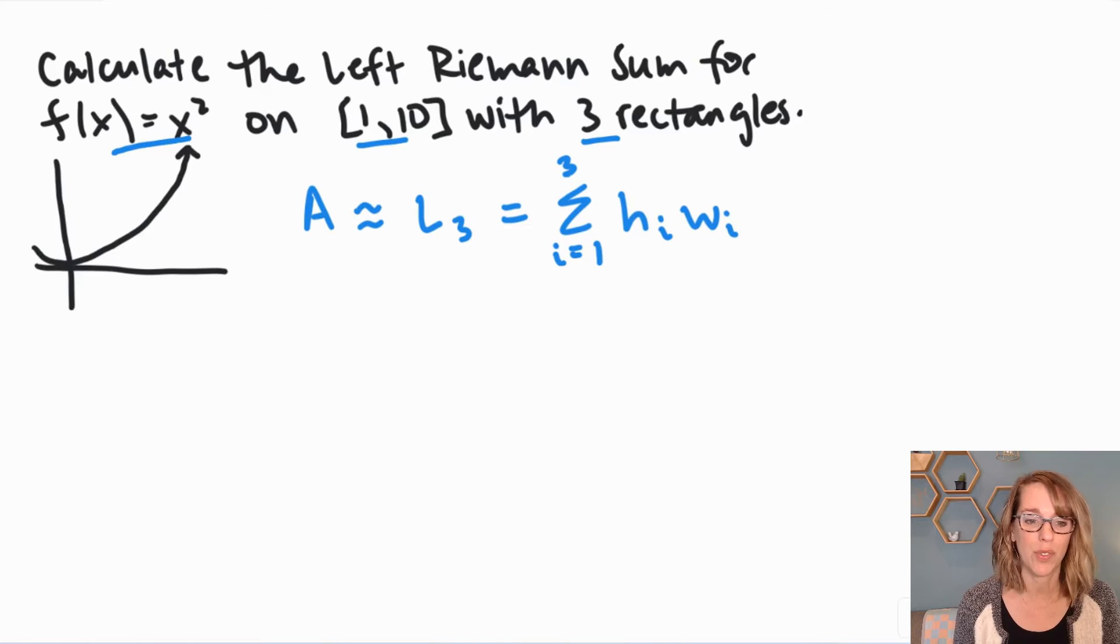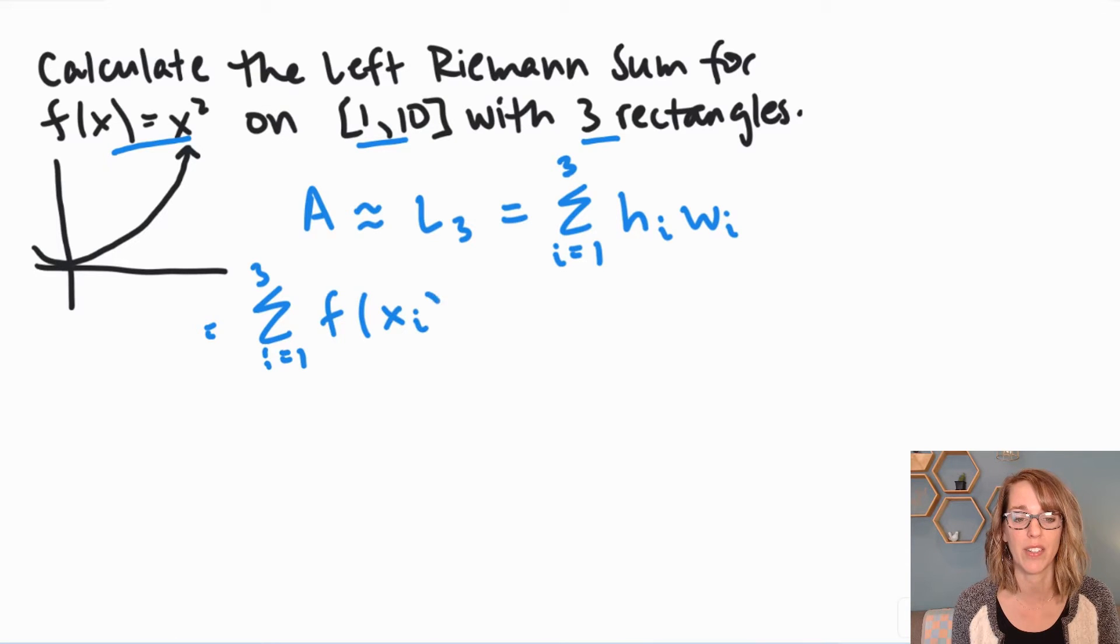If I put this into terms of my function, i equals 1 to 3, that height is going to be my function value. So that's f of my sample point, which we call x sub i star. And I'm going to make that specific to our problem here in just a second. The width is going to be that difference in the x direction, which is delta x.